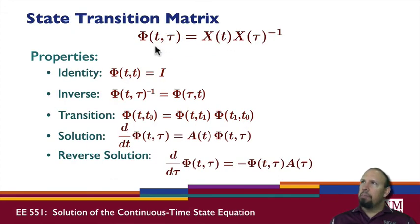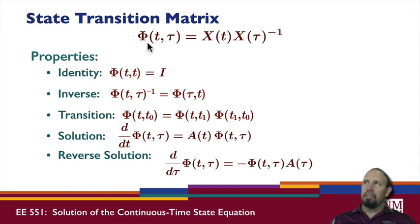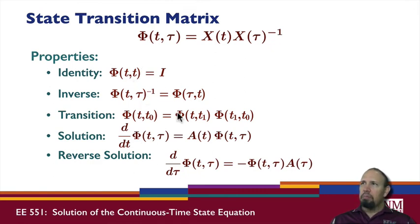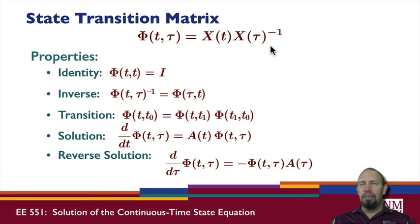In continuous time, once we have the fundamental matrix of solutions for a time-varying problem, we compute the state transition matrix by evaluating X at t and multiplying by the inverse of X evaluated at τ. This product then gives us the state transition matrix. We can show that evaluating it at the same times yields the identity, and that it satisfies all the group properties. It's complicated, but it's not too bad. Computing e^(At) is not easy, and the time-varying case is even more complicated, but you do what you have when you have it.